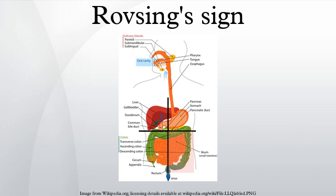Rovsing's sign, named after the Danish surgeon Niels Thorkild Rovsing, is a sign of appendicitis. If palpation of the left lower quadrant of a person's abdomen increases the pain felt in the right lower quadrant, the patient is said to have a positive Rovsing's sign and may have appendicitis.